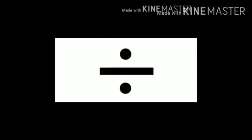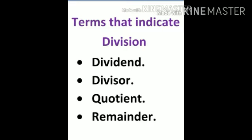Students, this is our operational sign which we use in division. Now we will discuss the terms that indicate division. First, dividend. Second, divisor. Third, quotient. And fourth, remainder.